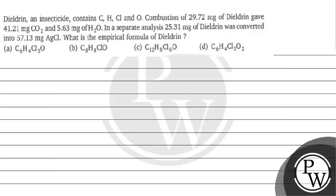Hello, let's read this question. The question basically says: Dieldrin, an insecticide, contains carbon, hydrogen, chlorine and oxygen. Combustion of 29.72 mg of Dieldrin gave 41.21 mg of carbon dioxide and 5.63 mg of water. In a separate analysis, 25.31 mg of Dieldrin was converted into 57.13 mg of AgCl. What is the empirical formula of Dieldrin? Options are given to us.